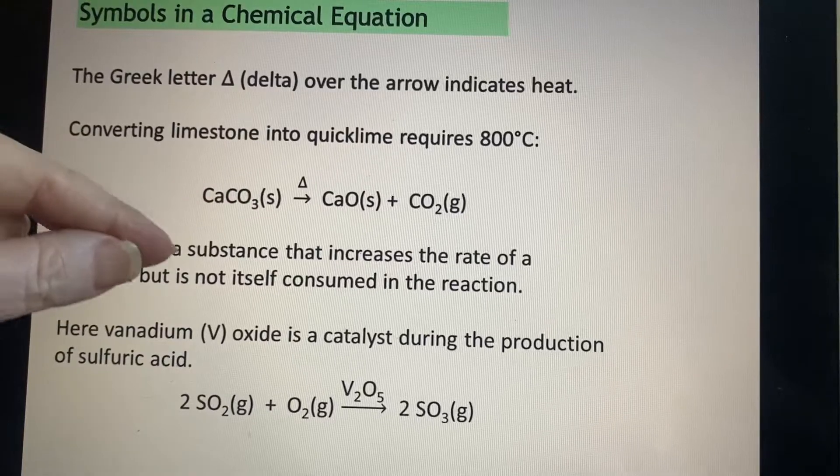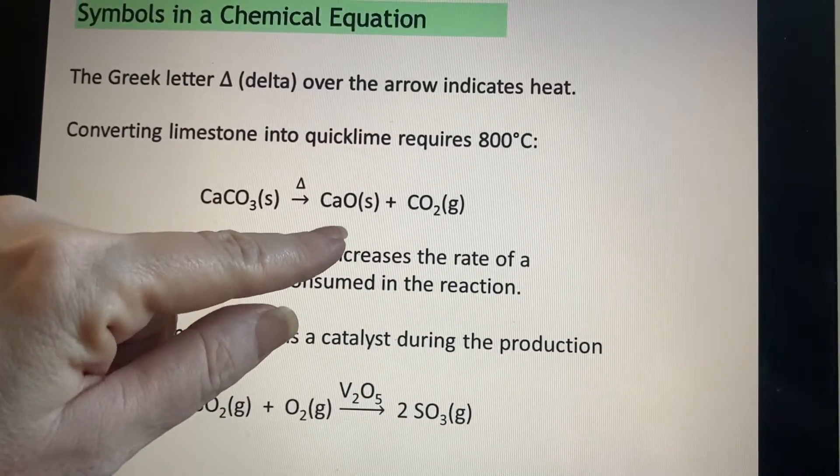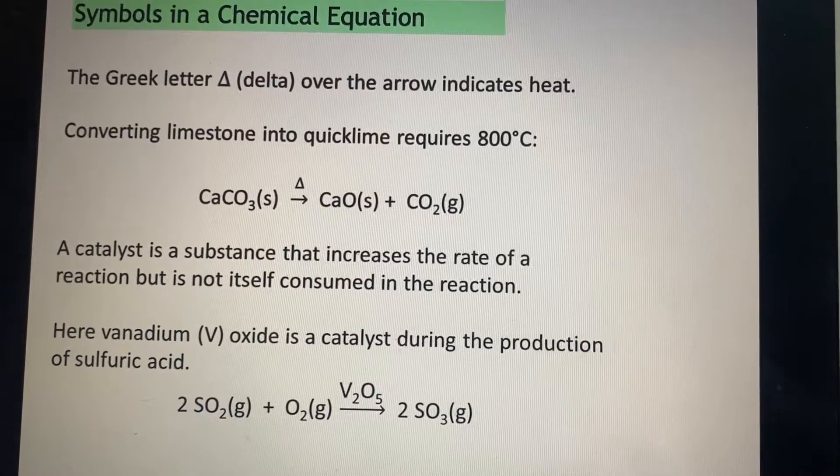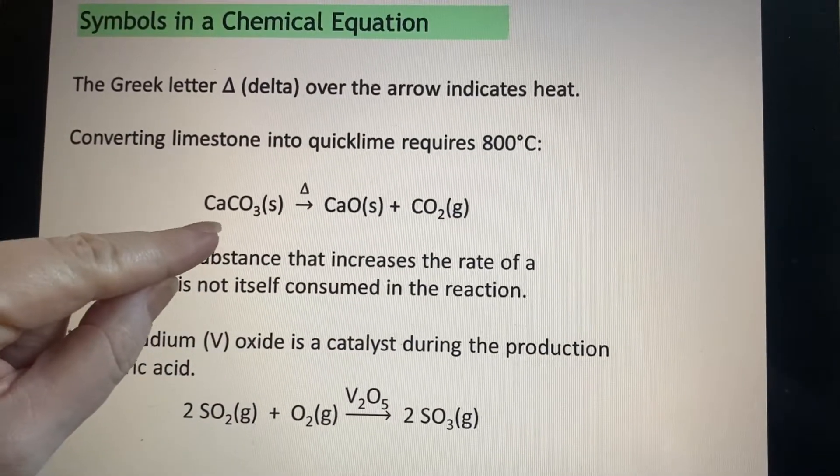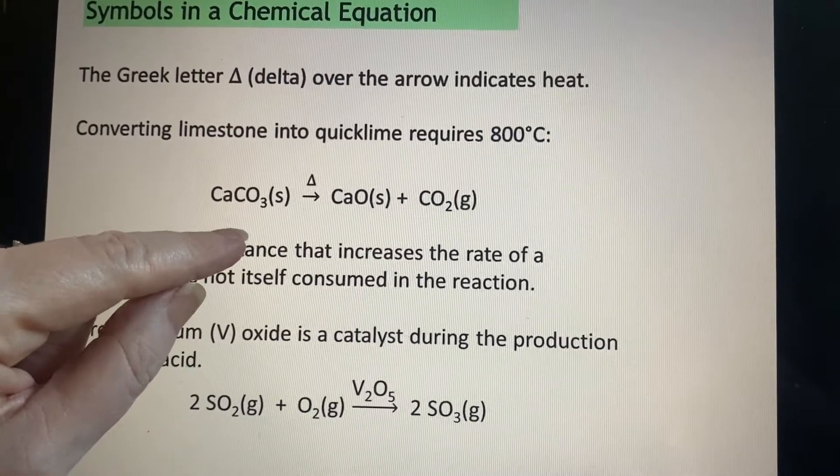If you're trying to take limestone and turn it into this quicklime, you're going to have to heat it up to 800 degrees Celsius to make this decomposition occur. Otherwise, the calcium carbonate would just as soon stay the way it is.